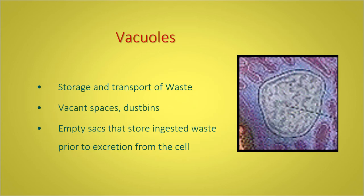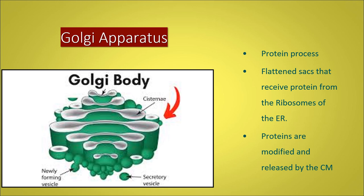A vacuole is a vacant space or dustbin, a storage for transportation of waste. Before we get rid of it, before it's evacuated from the cell, all of the ingested waste prior to excretion from the cell is stored here. So this is like a vacant lot, an empty space, ready to be disposed of through the cell wall and evacuated.